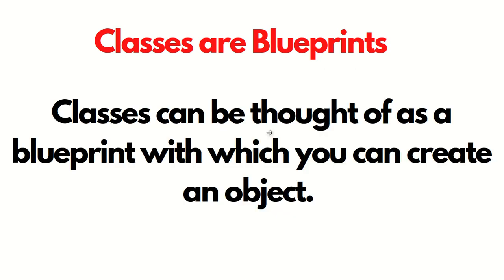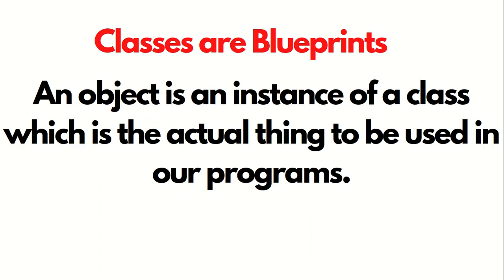We can say that classes are blueprints because classes can be thought of as a blueprint with which you can create an object. This is how we can define classes. As far as objects are concerned, an object is an instance of a class, which is an actual thing to be used in our programs. This is how we can define an object.